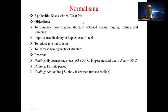The next process is normalizing, applicable for steel with a carbon percentage of 0 to 2 percent. The objective of normalizing is to eliminate the coarse grain structure obtained during forging, rolling, and stamping. Normalizing improves the machinability of hypo-eutectoid steel and reduces internal stresses. It also increases the homogeneity of structure.